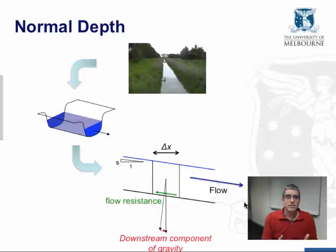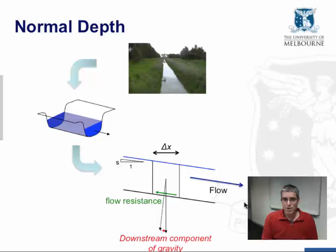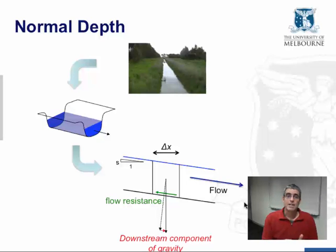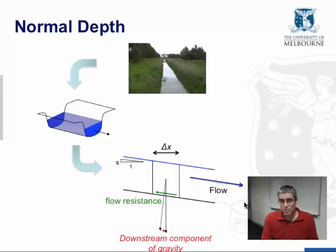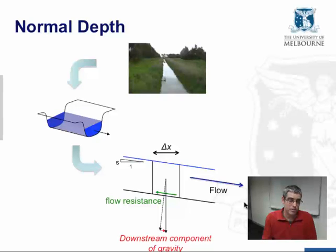Under these conditions there are two forces acting on our body of water. There's the downstream component of gravity acting along the river channel, and then there's the flow resistance created by the shear between the water body and the boundary of the channel, which acts upstream. For uniform flow to occur, these two forces must be equal — because under uniform flow there's no acceleration or deceleration, so the forces must balance. The downstream component of gravity must equal flow resistance.